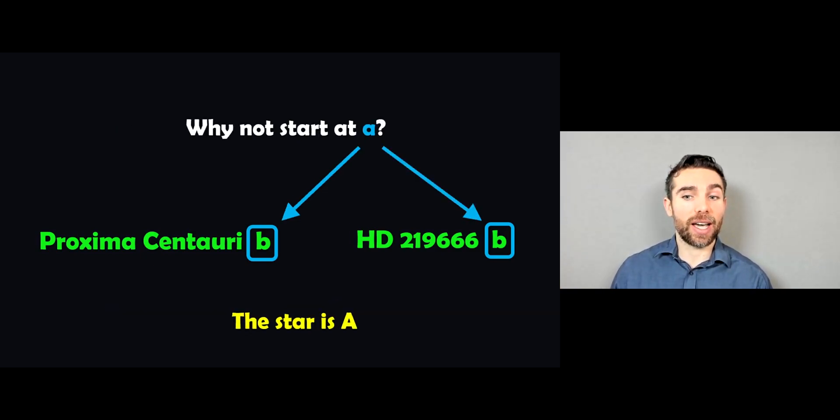Now, why doesn't it start at A? Well, this star is actually A. So it doesn't start with A because the star is A. The planet is then B. And it goes from C to D.